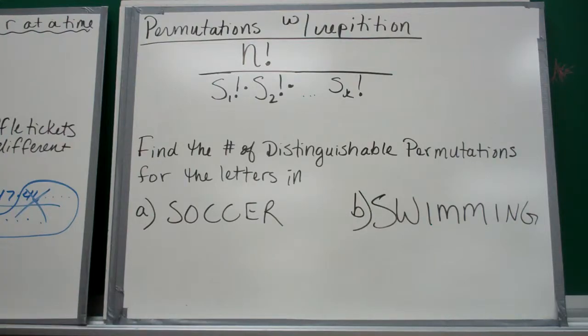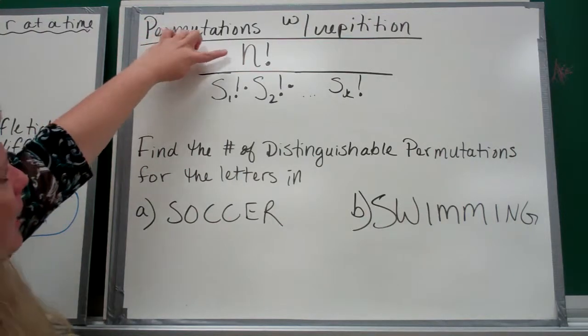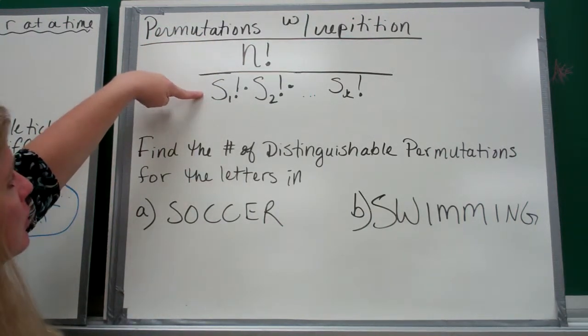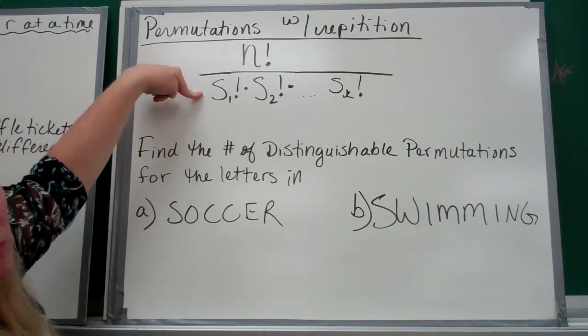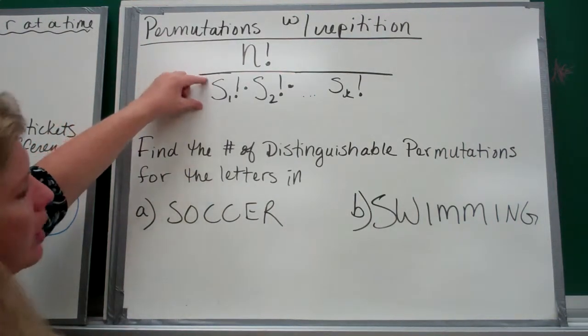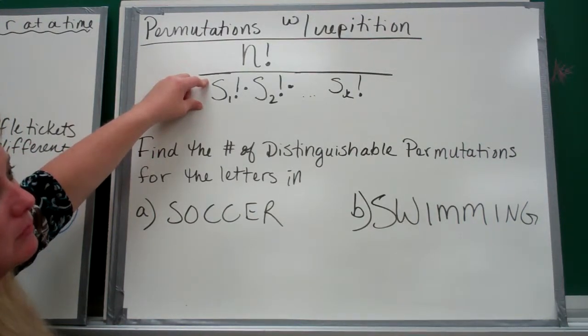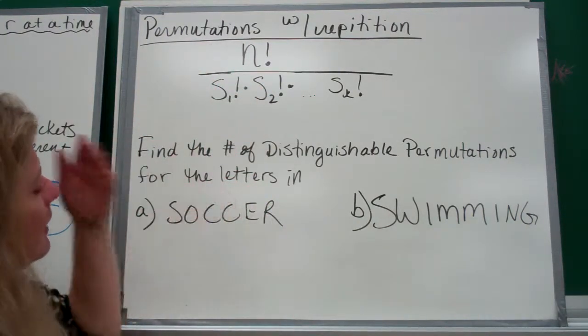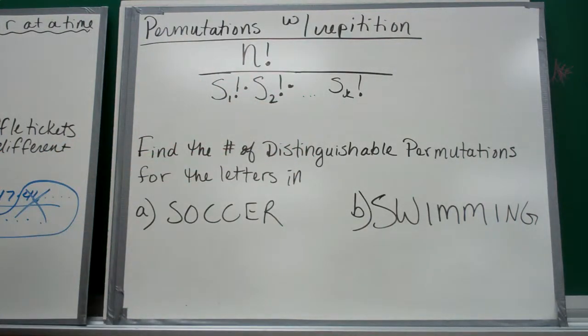Permutations with repetition. There's a formula where N is your number of items all together, and each of these S's are however many things are repeated however many times. Let's say I have the number 1 and it's repeated twice. It's easier if I just do these two examples with the explanation there.